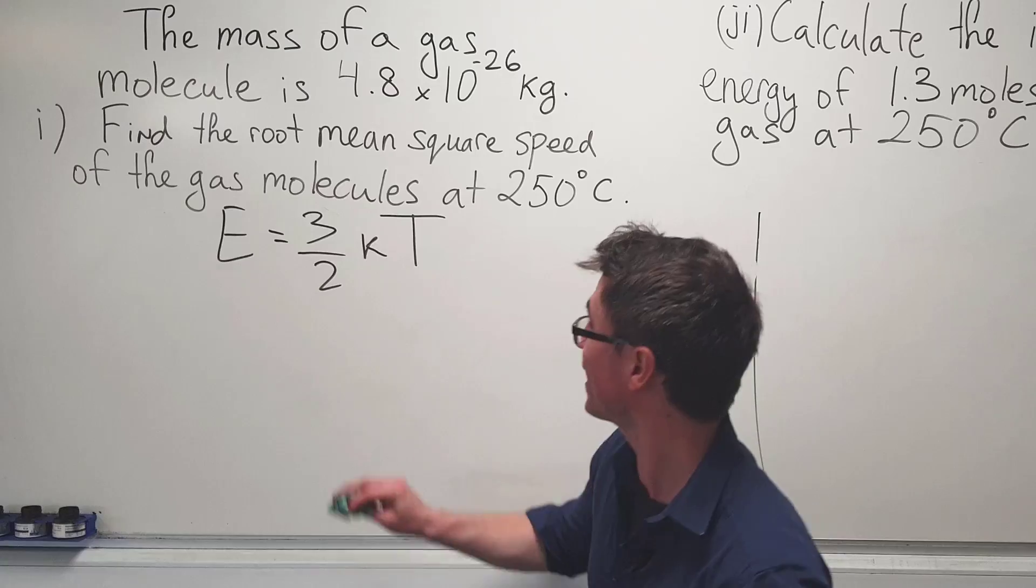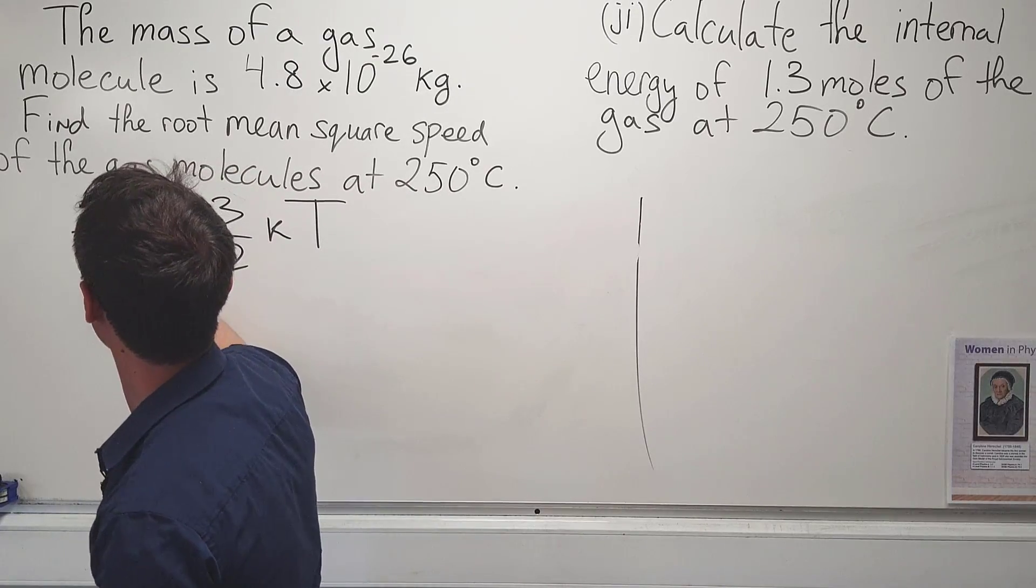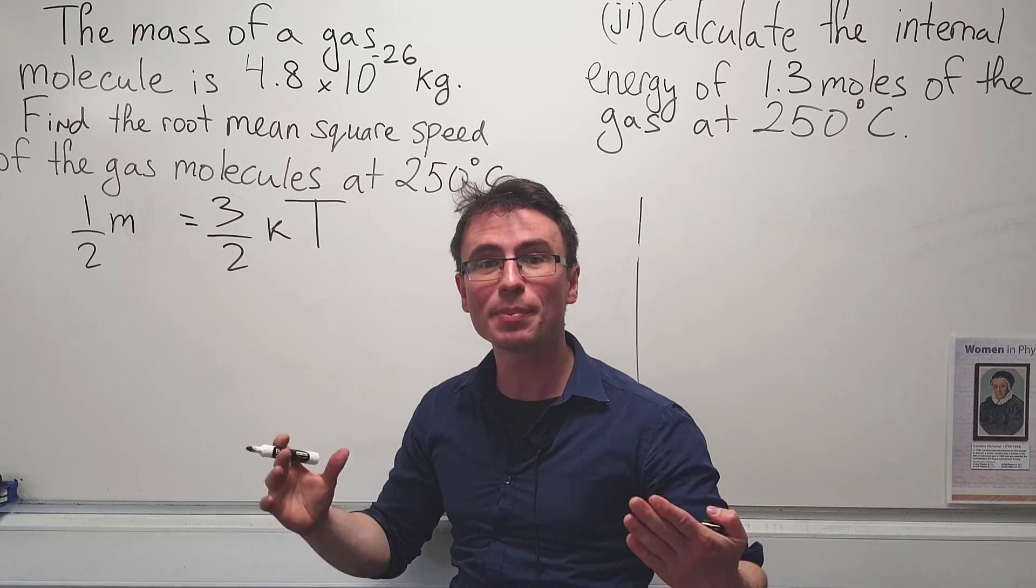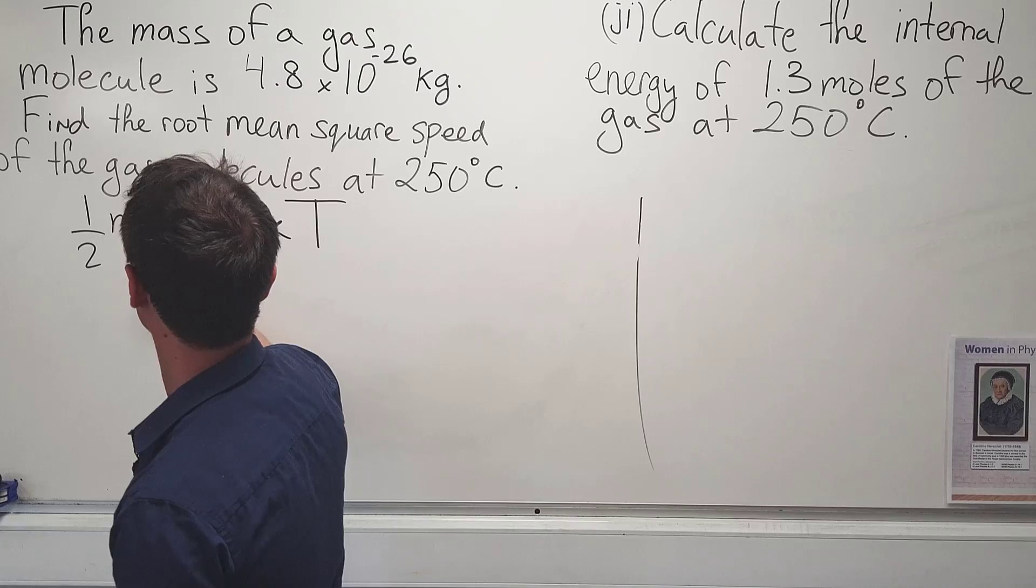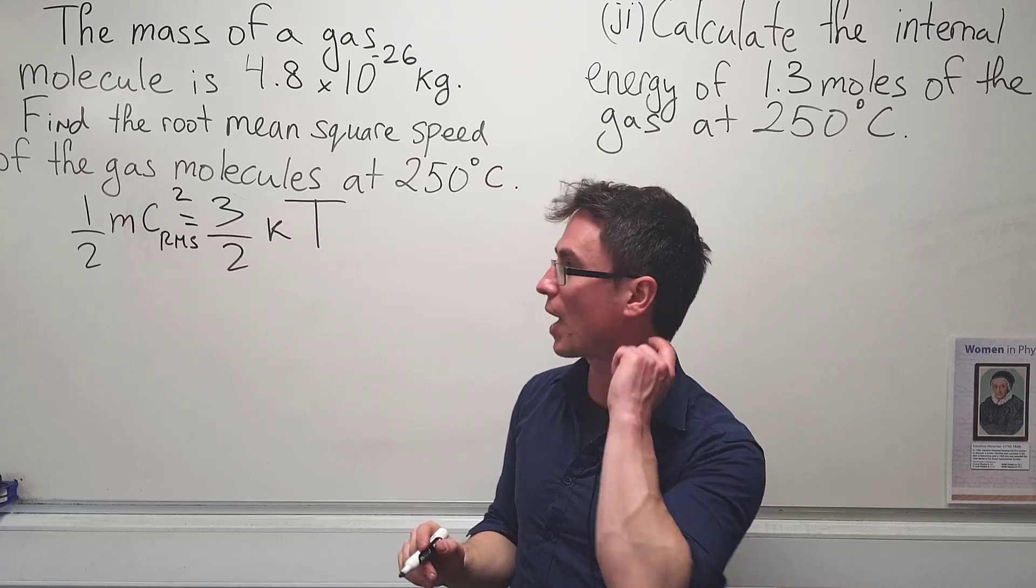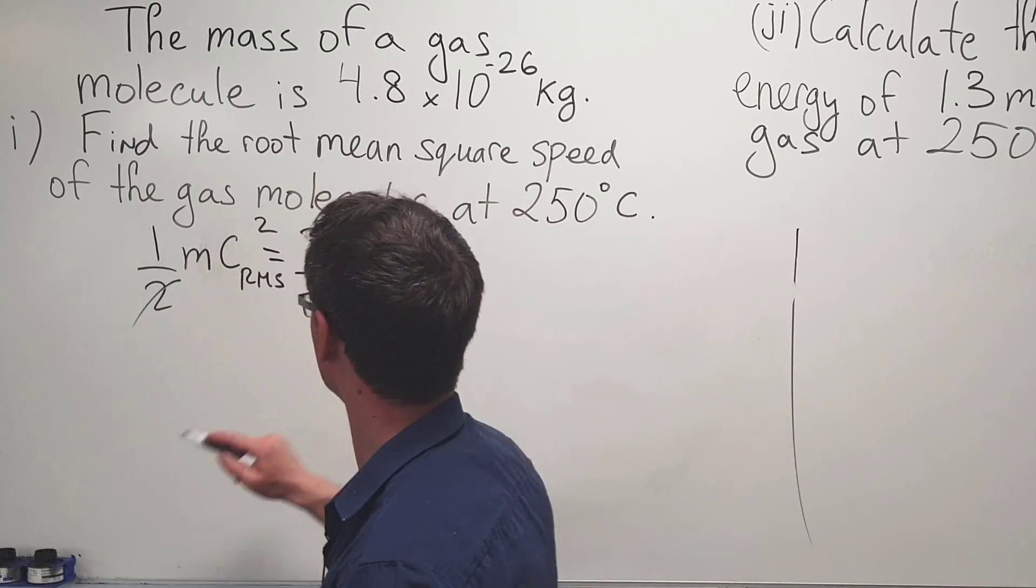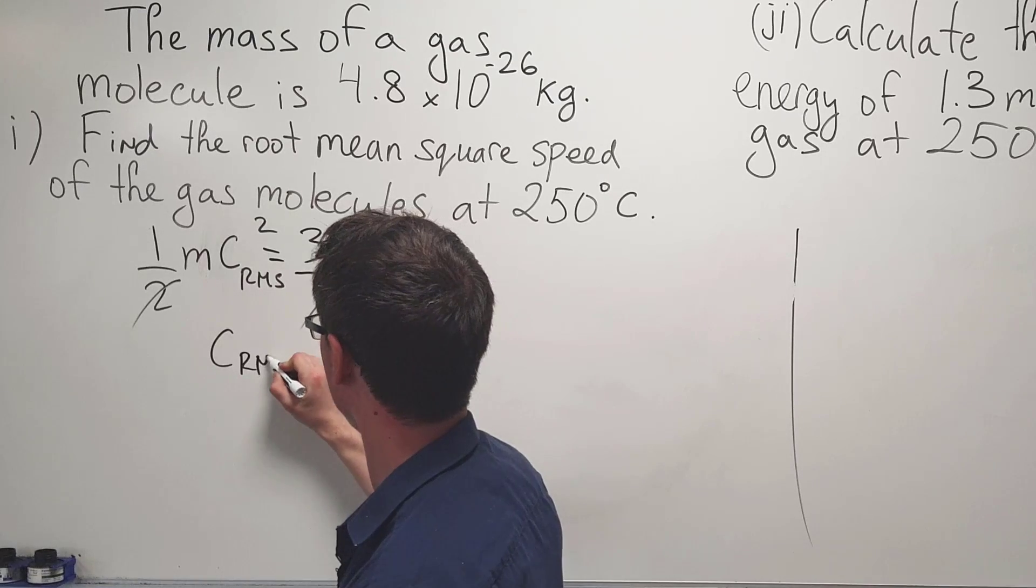Now, we can express the kinetic energy as just a half times the mass times the root mean square speed squared. So, let's just call that RMS and then I'm going to square that value. So, now I'm just going to cancel out the halves and rearrange for the RMS.